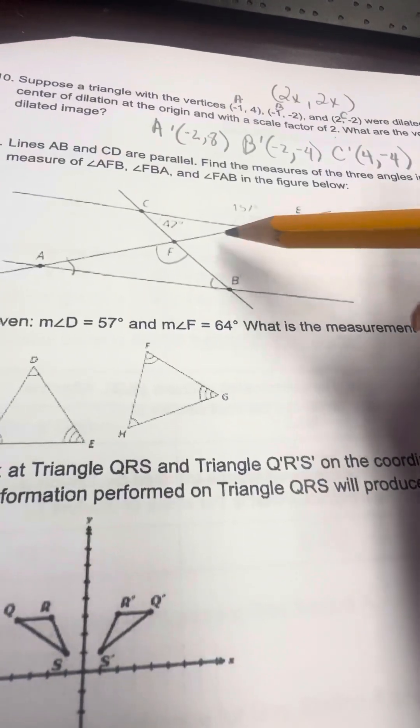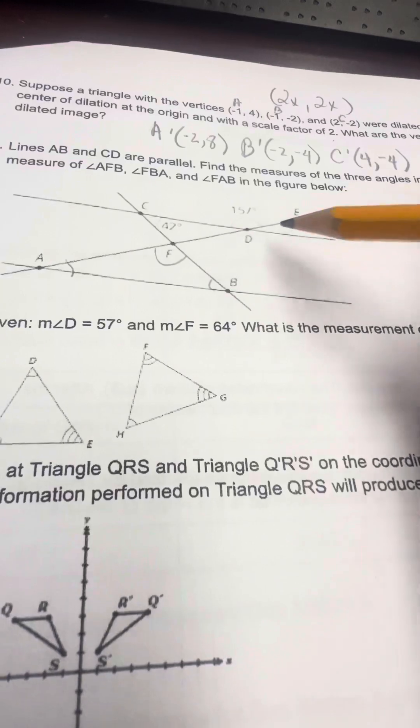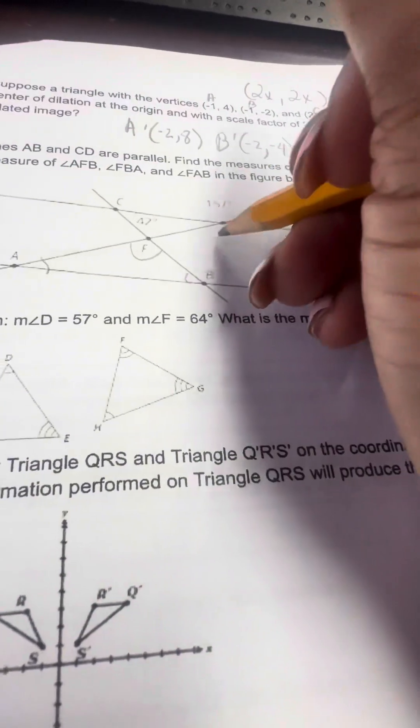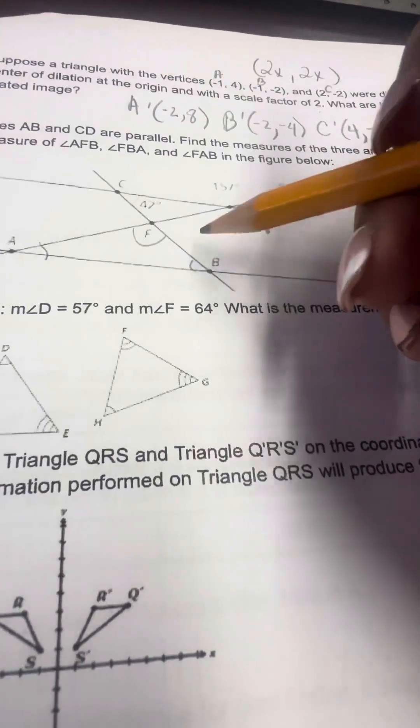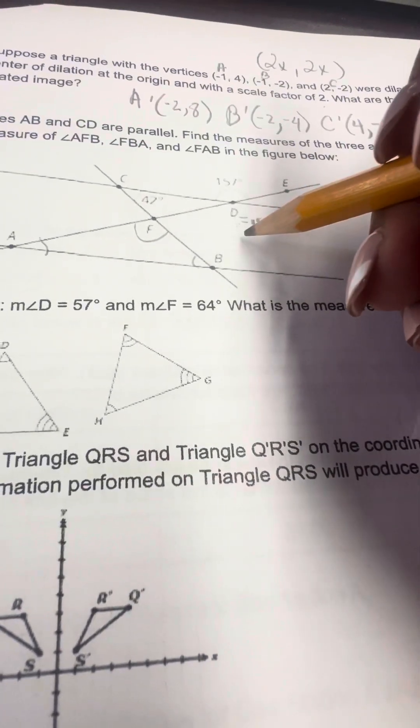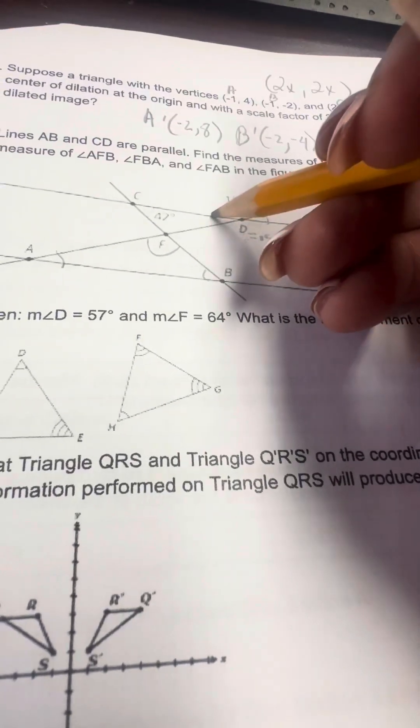Here we have a triangle, and we have a line across, a supplementary line. These two are the same, so this is 157 degrees. Now we also look here. If this is 157 degrees, and these are supplementary, we have to find these angles here.